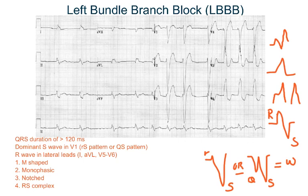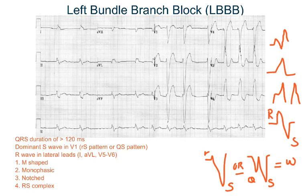And if you see the letter M in V1, it's right bundle branch block. In right bundle branch block, we looked at the S waves in the lateral leads. In left bundle branch block, you look at the R waves in the lateral leads. The R waves could be either M-shaped, monophasic (just one R wave with no Q or S wave), notched like in this ECG — look at lead 1, V5, V6 — or it could be an RS complex.